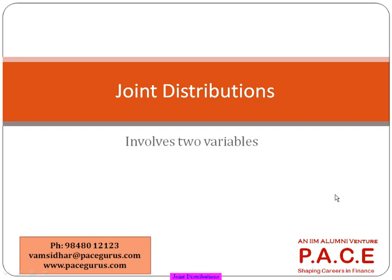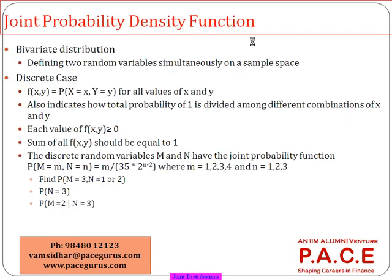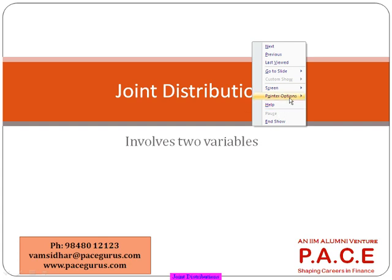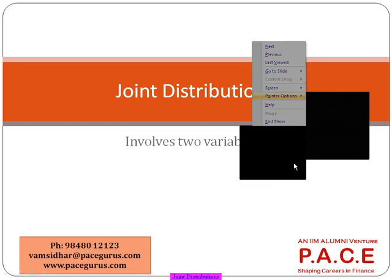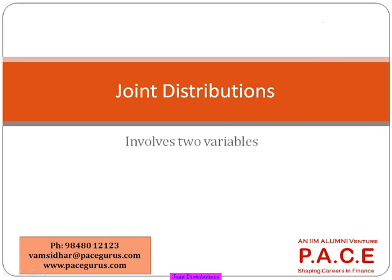Especially when two or more variables are in some kind of addition or subtraction relationship, that is where we look at joint distribution applications. But if they are in a multiplication kind of form, we call them compound distributions. For example, I may want to model the overall claim amount by doing a separate model for number of claims and a separate model for average claim amount, and then multiply the two. Wherever that multiplication comes up, we call them compound distributions, which we will see in the next session. Here we focus primarily on addition or subtraction relationships between variables.